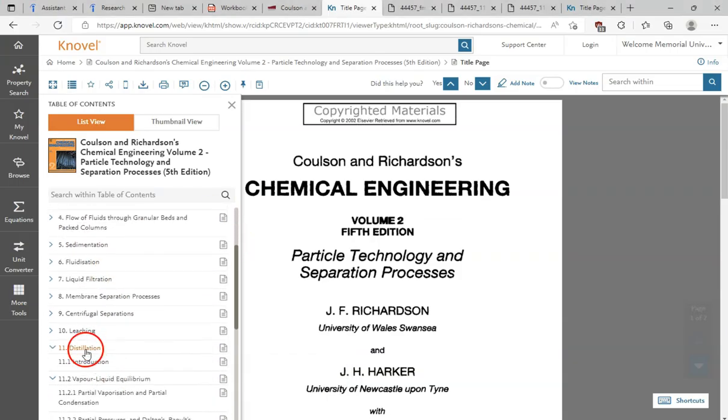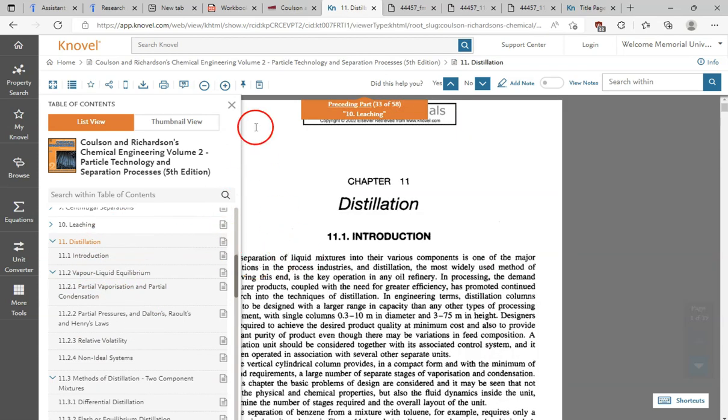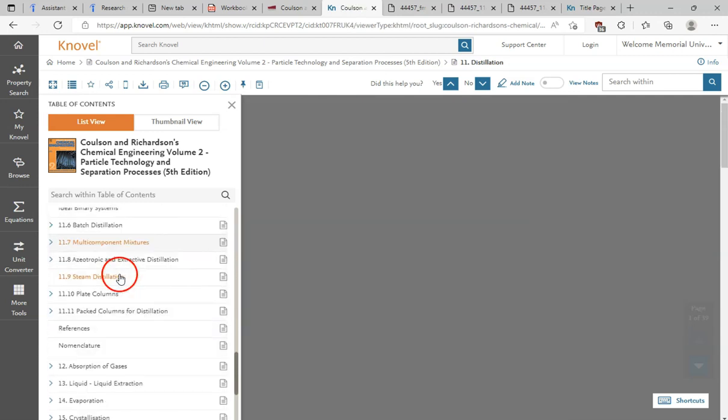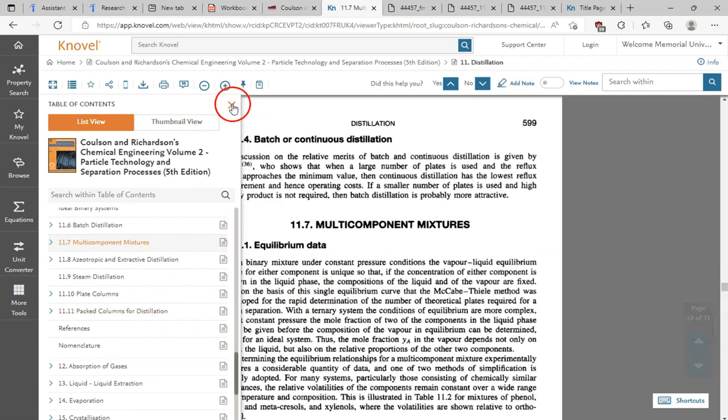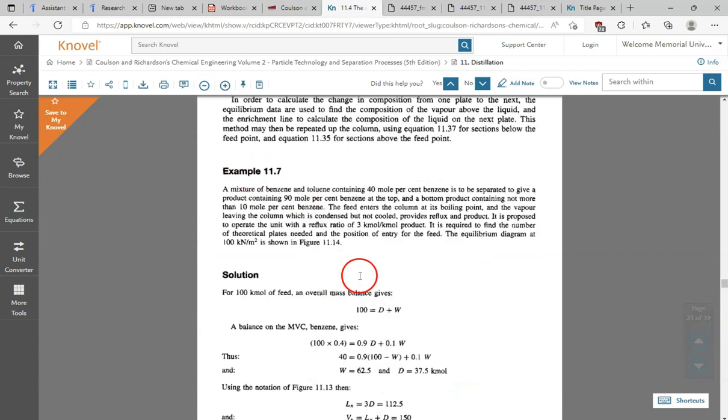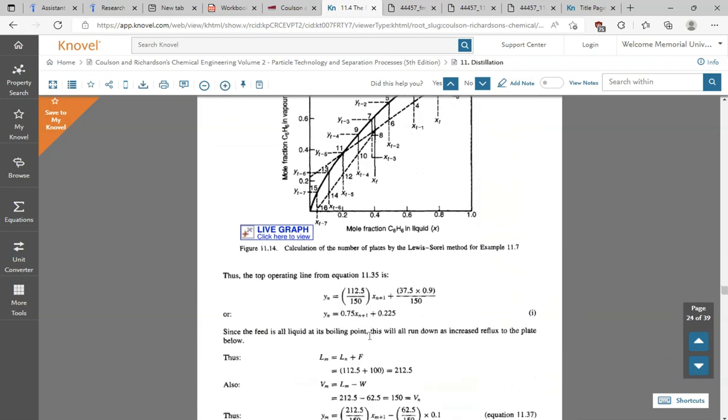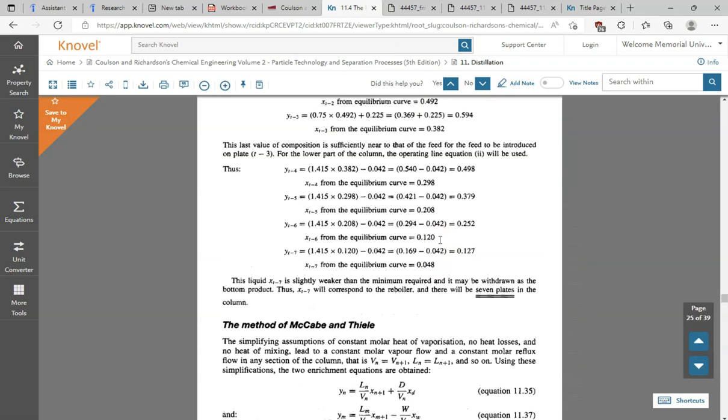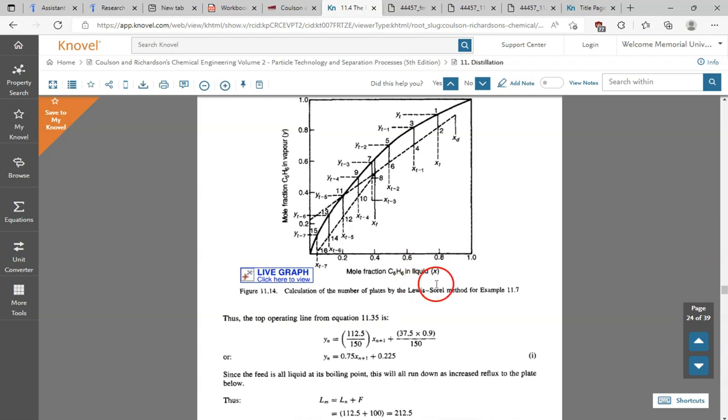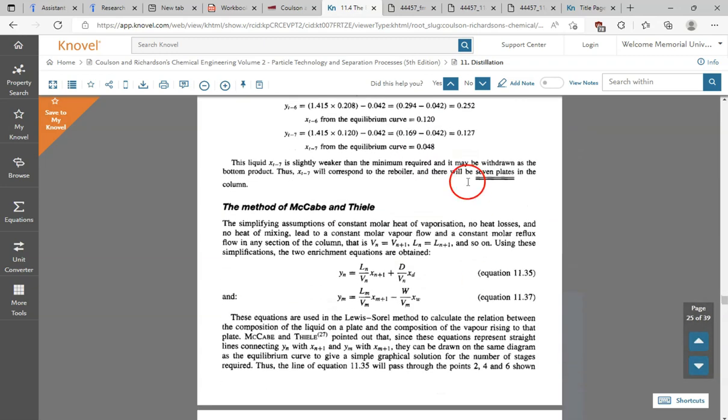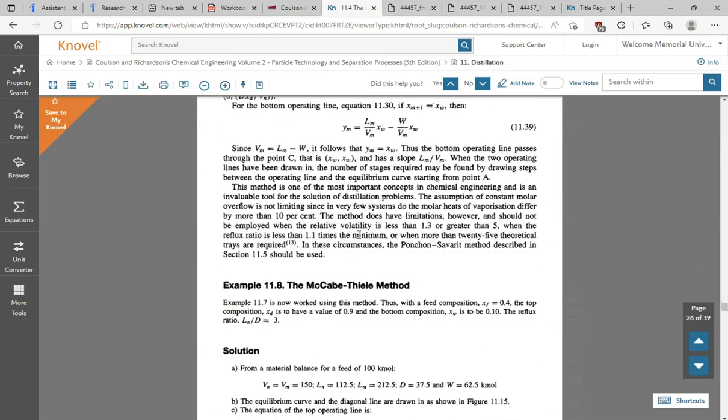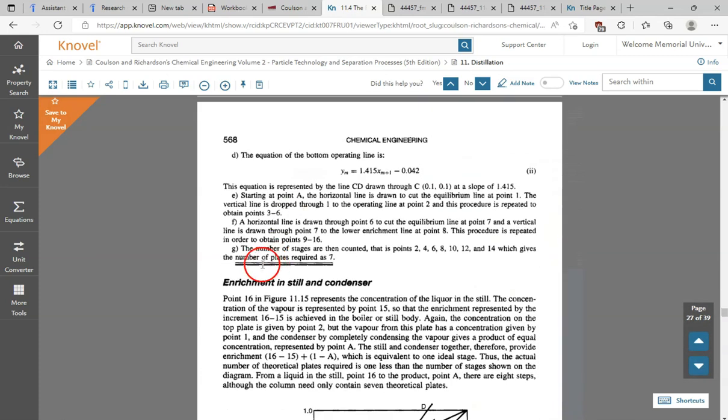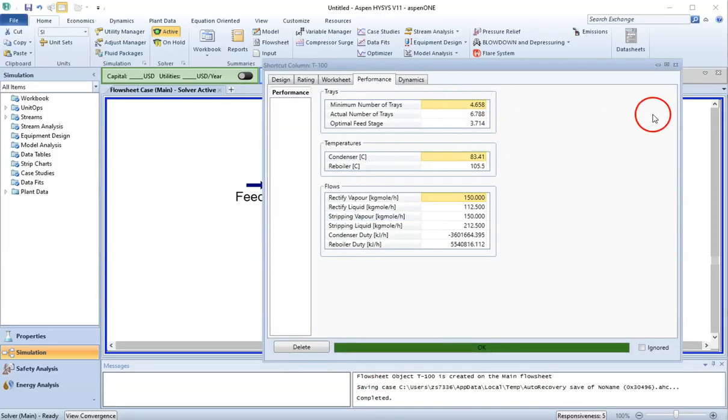Now let's go back and check on what was the original answer. This is my Richardson Coulson Volume 2, chapter number 11, and we were doing example 11.7 from this. This is my example that I just did. If I look at its solution, it is using two methods. The first method, as you can see, we have 7 number of plates. This method is the Lewis-Sorel method. The book also solved this problem with the McCabe-Thiele method. We can see the answer again for this. This is example 11.8, same example but McCabe-Thiele method. If I look at the solution again, we have 7 number of plates, and this is what we have from our ASPEN HYSYS.